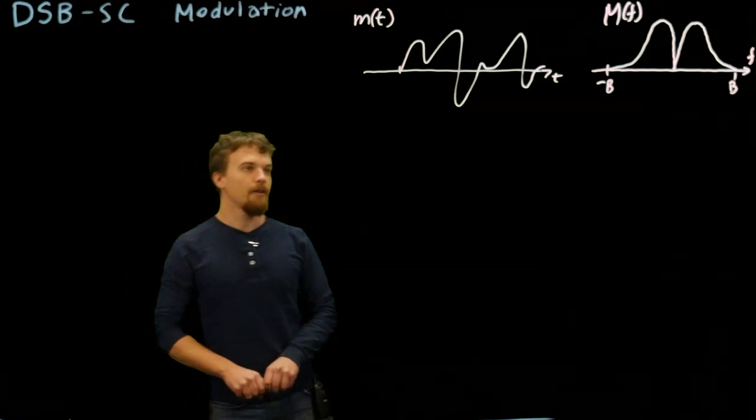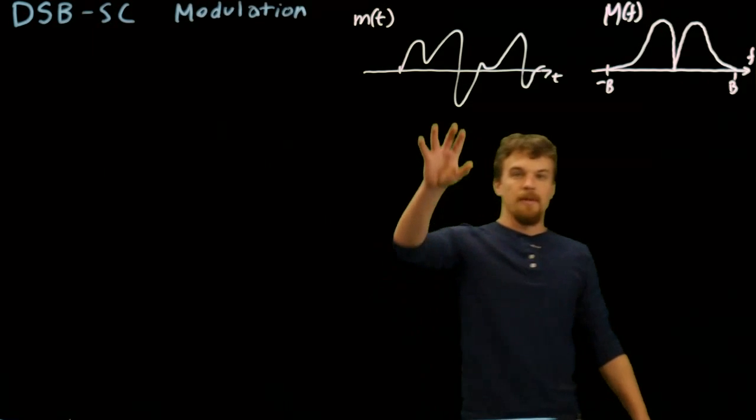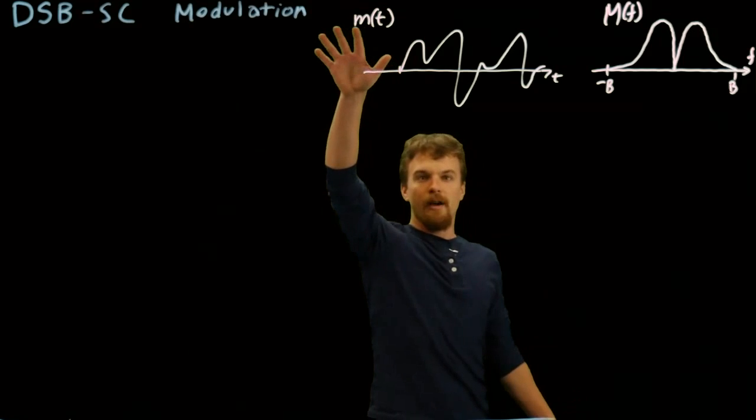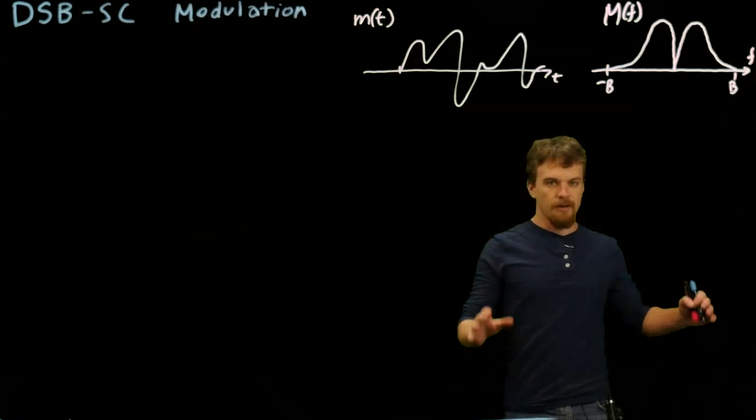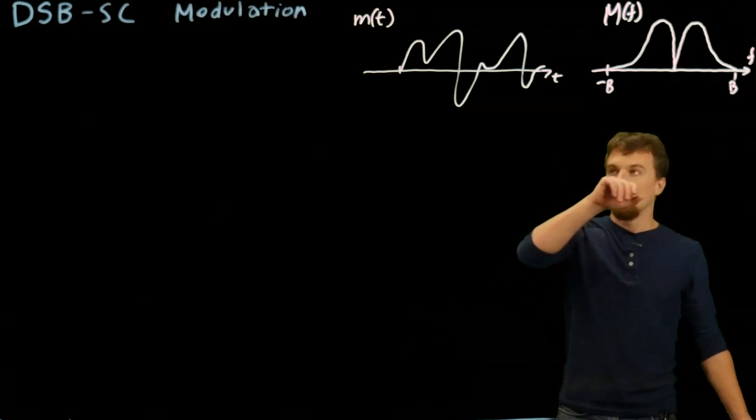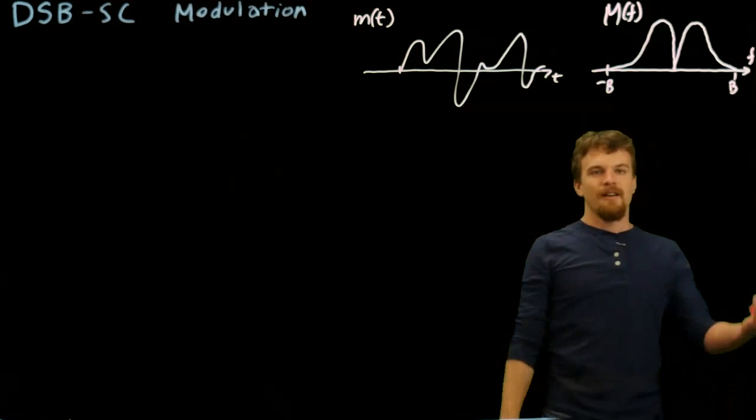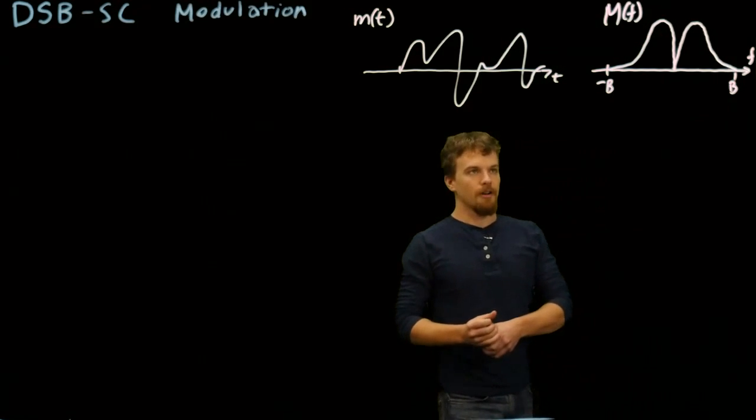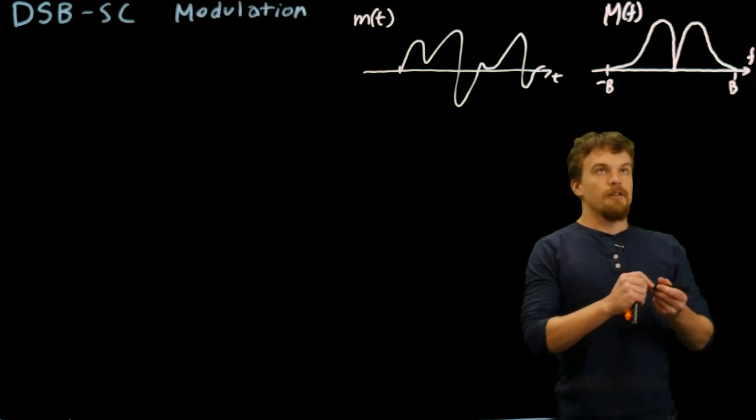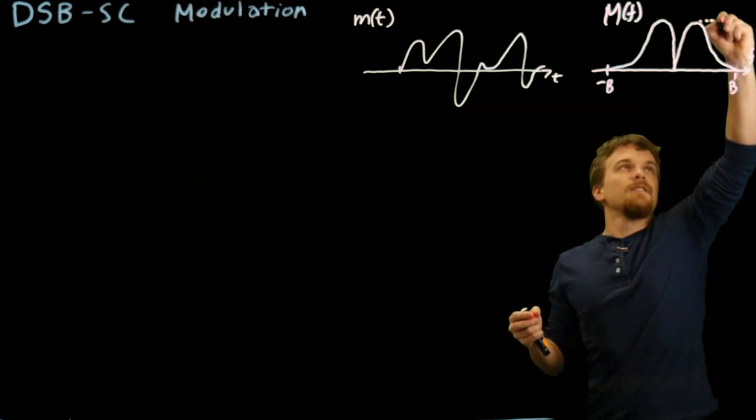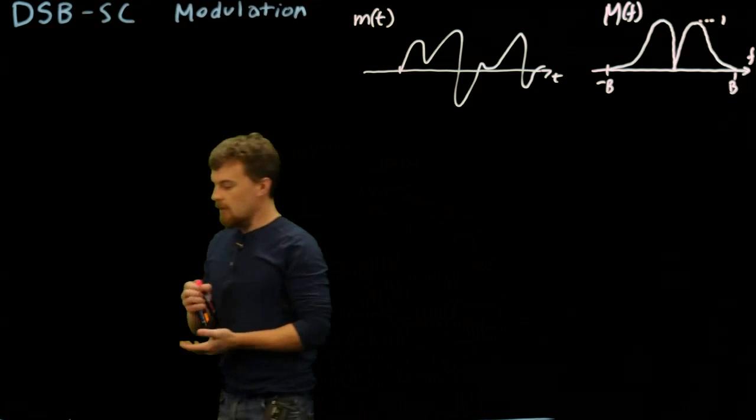In our video about modulation in general, we talked about how we can take some kind of message. We're going to call M of t some kind of message, maybe an audio signal, something we want to transmit with a radio wave. So we're going to suppose we have a message and this could be its Fourier transform. Let's assume this is normalized to height one because it'll make our math a little bit easier.